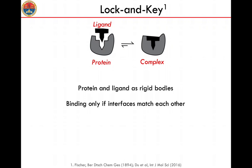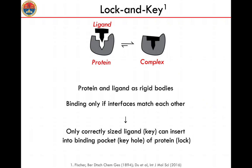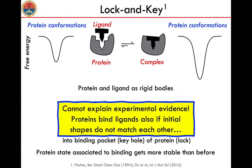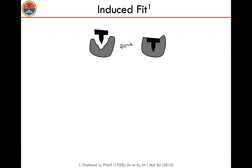The lock-and-key model has been superseded by later models, but its historical merit was to introduce the concept of shape complementarity: only the correct ligand — the key — can bind to the keyhole, which is the binding site in the protein — the lock. A feature of the lock-and-key model is that binding is associated with stabilization of a protein conformation. Unfortunately, it cannot explain experimental evidence where protein and ligand bind even if their initial shapes don't match. The first model to address this was the induced fit model by Koshland in the 1960s.